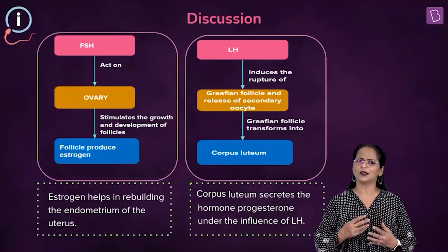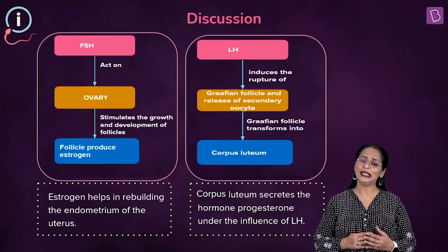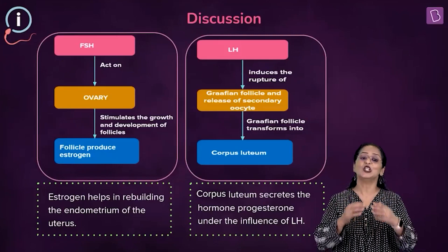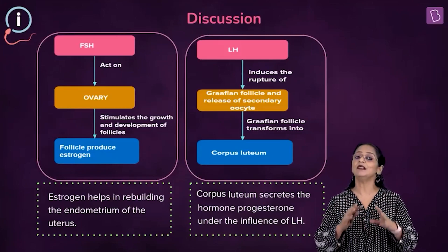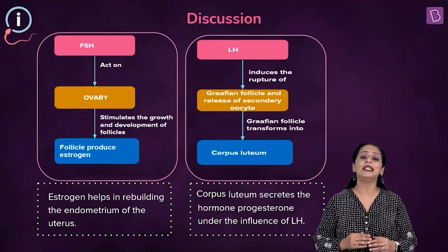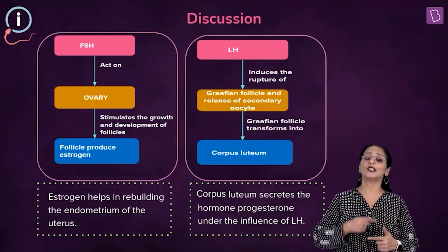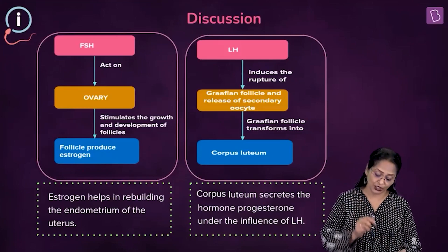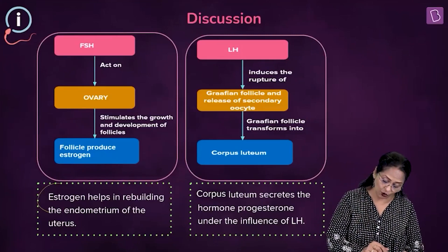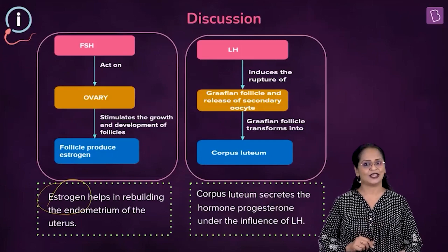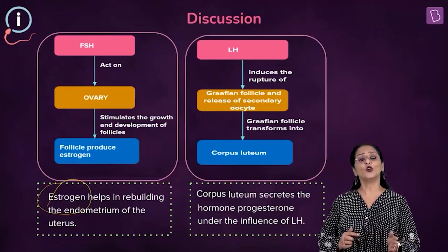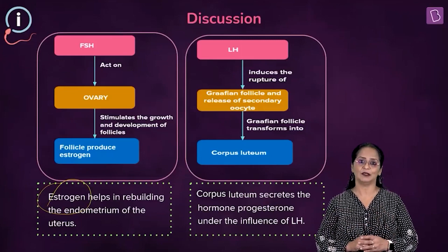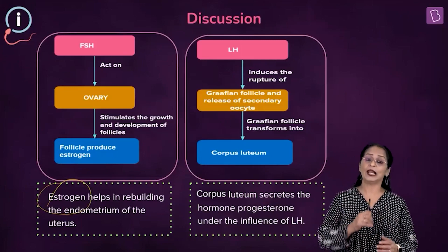Why does the endometrium have to be rebuilt? The endometrium is shed during the menstrual phase or bleeding phase of the menstrual cycle, so it has to be rebuilt — and that is done under the influence of the hormone estrogen. That is the role of follicle-stimulating hormone or FSH.